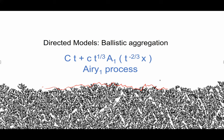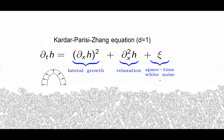We have these universal exponents: one-third as the size of a fluctuation and T to the two-thirds as the lateral size. But there's a new process, and what we learn from this is that we're supposed to see a process which depends on the initial data. So the real question is: what are these universal processes that one's supposed to see, and what are their finite dimensional distributions? For ballistic aggregation, there are essentially no results.